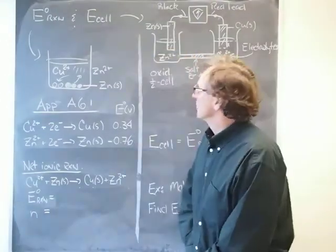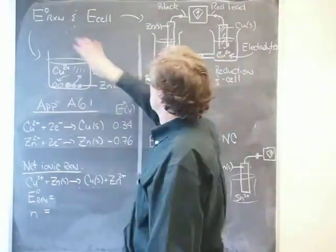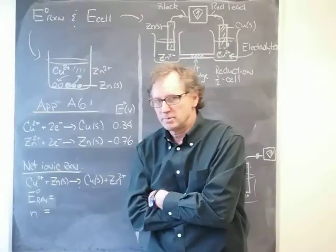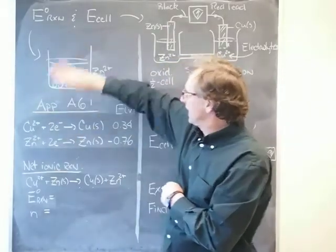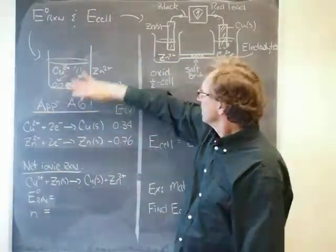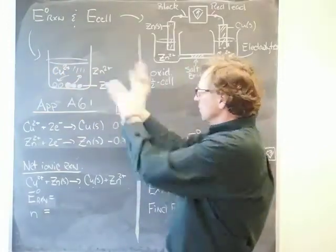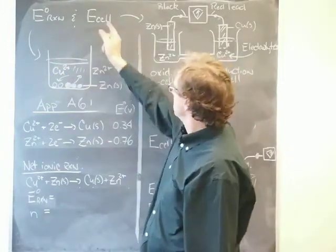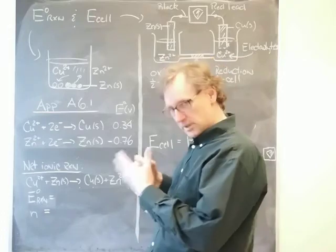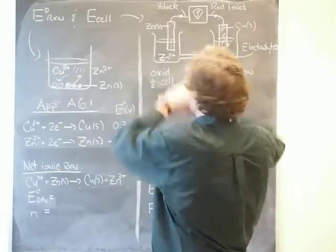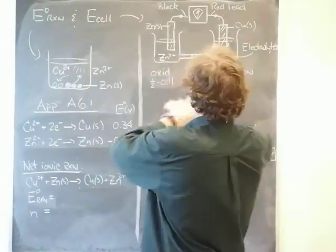I'm here to help you out with some electrochemistry. Today we're going to look at the distinctions between E naught of a reaction, which describes something about what's going on in a single reaction vessel, and E cell, which describes the electrical potential associated with an electrochemical cell in which half reactions are separated into two different locations.